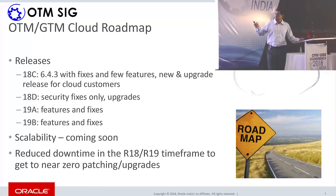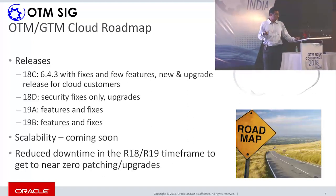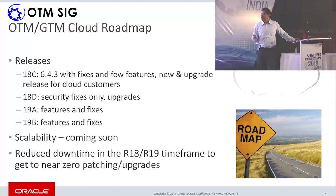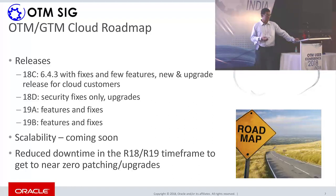We will upgrade from 18c to 18d and so on. The next major release will be 19a with many new functions, features, and enhancements, followed by 19d. For those familiar with OTM on-premises using scalability — which we refer to as CAR — that capability for scaling workloads across multiple app servers doesn't exist in cloud yet, but we are looking at adding it back. Our major focus in releases 18 and 19 has been reducing downtime during upgrades and patching, targeting near-zero downtime.